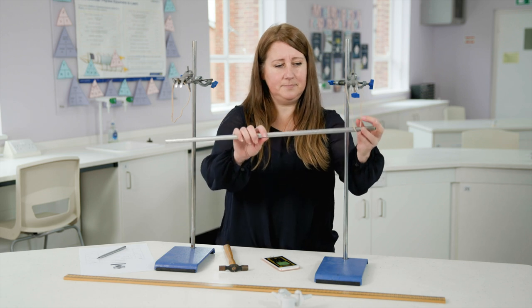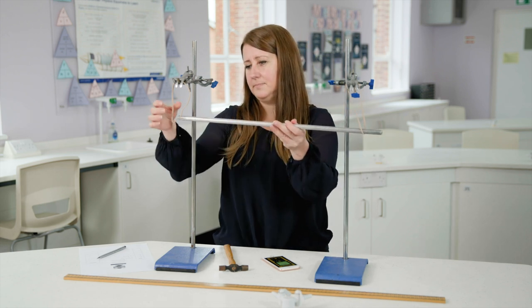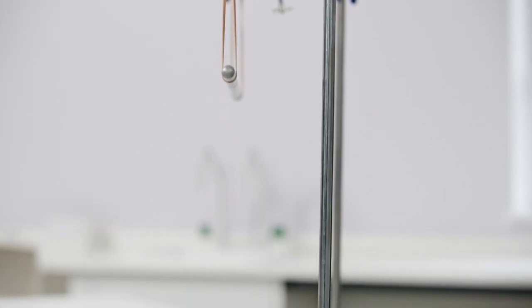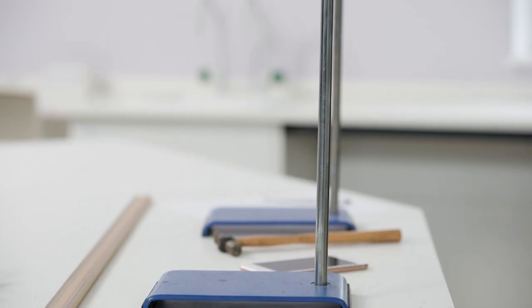Firstly you will need to suspend a metal rod horizontally using clamp stands and rubber bands. Make sure you balance the rod over the feet of the clamp stand. This makes the apparatus stable and less likely to tip over.